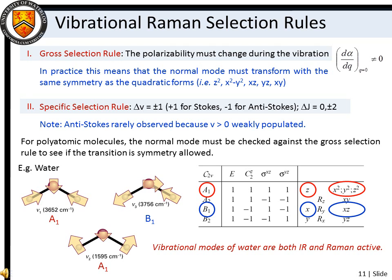For example, the vibrational normal modes of water are of A1 and B1 symmetry, and we see that there are quadratic functions that transform under C2V symmetry for both the A1 and B1 irreducible representations. Thus, the vibrational Raman transitions of water are symmetry allowed. Note that these same modes are IR active.